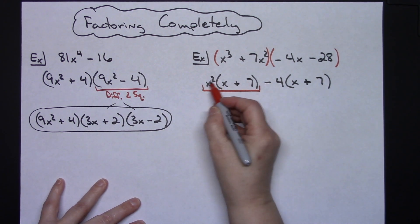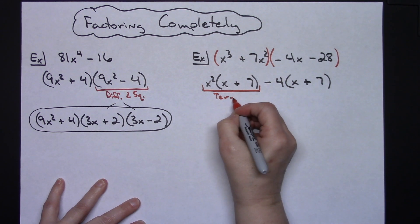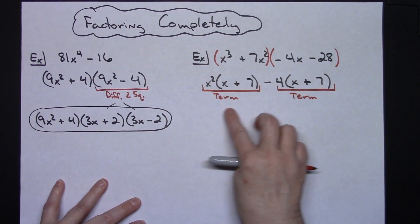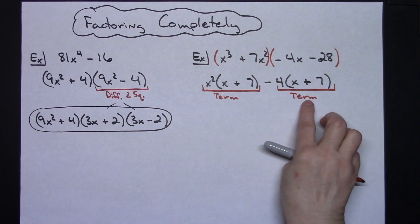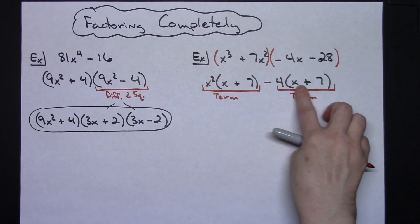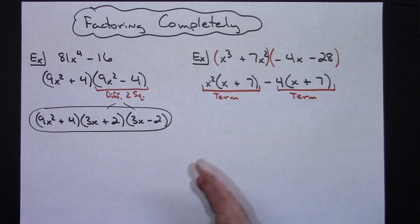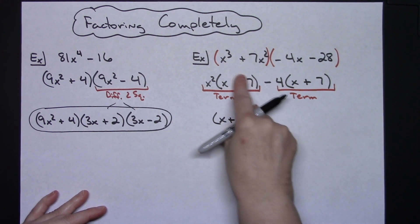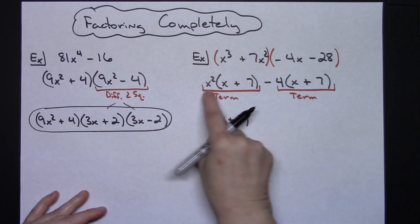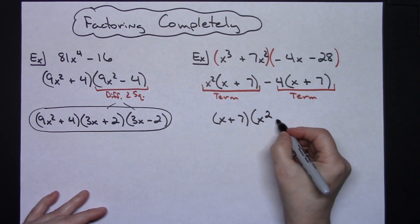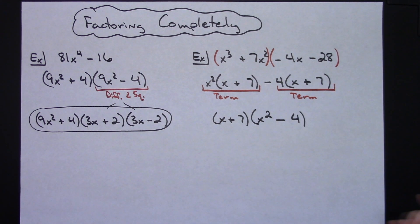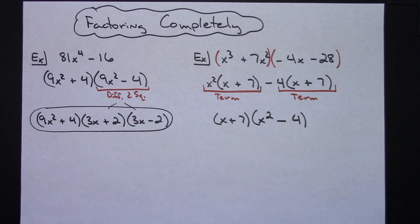At this point I have a polynomial with two terms separated by a minus sign. Both terms contain the binomial (x + 7), so I factor it out. In the first term, removing (x + 7) leaves x². The minus sign comes straight down, and in the second term, removing (x + 7) leaves 4. So by factor by grouping I get (x + 7)(x² - 4).